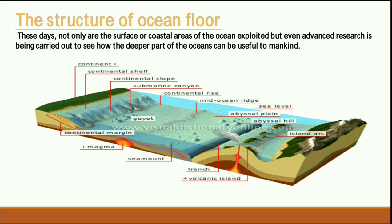In 1876, the British ship named HMS Challenger sailed around the whole world. During its voyage, it came across all these different landforms on the ocean floor, and it was understood for the first time that the ocean consists of different distinct landforms.